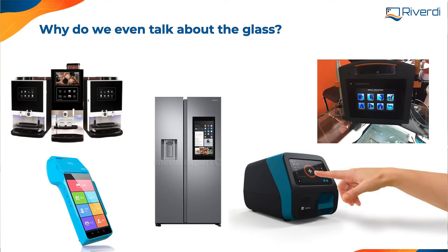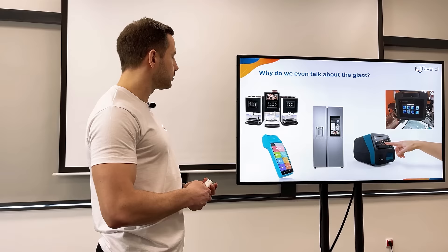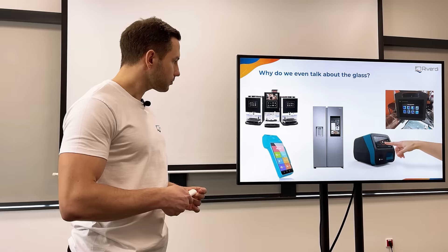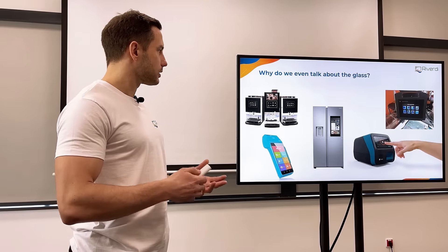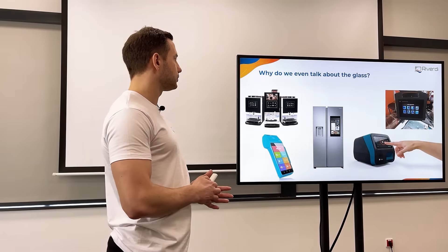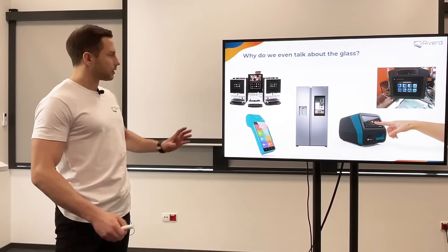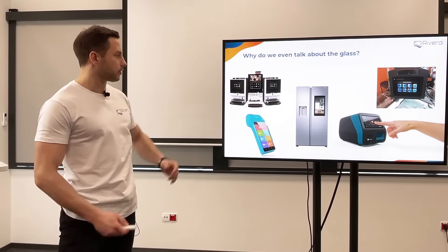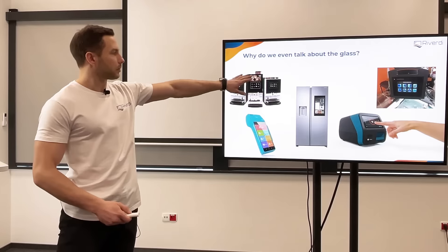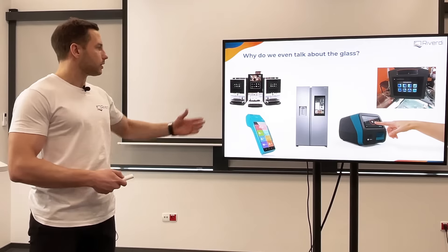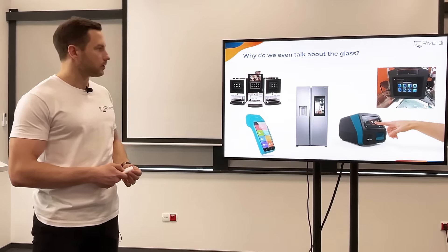So why do we even talk about glass? The most important thing is, of course, to protect the display from our point of view, but not only. As you can see on the devices I show here, the glass is an element of the design. It makes the device beautiful, it makes it look better, and can be designed in a way that protects not only the display, but could be the entire surface of a device — like here in this coffee machine. We have not only a display, but maybe some additional graphic or the whole front of the device.